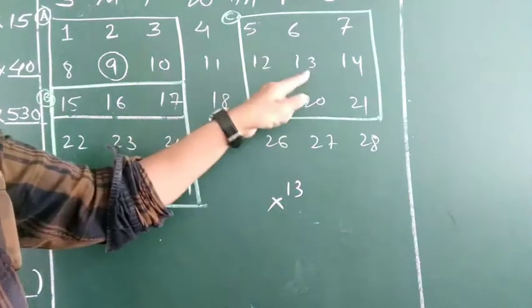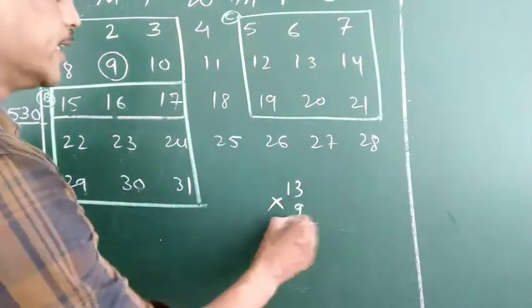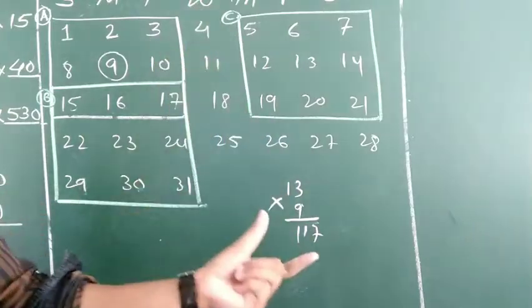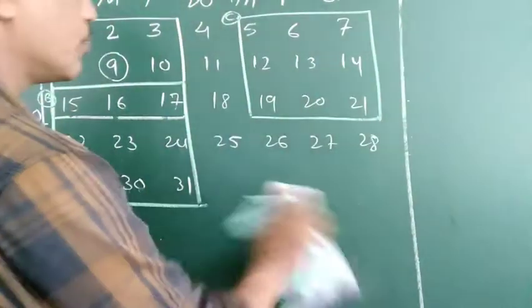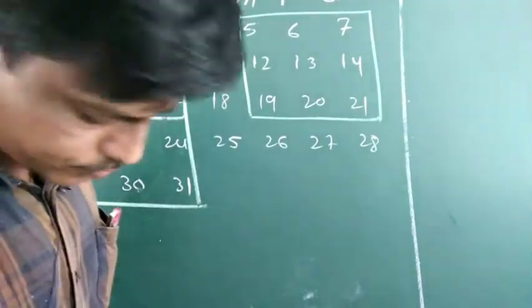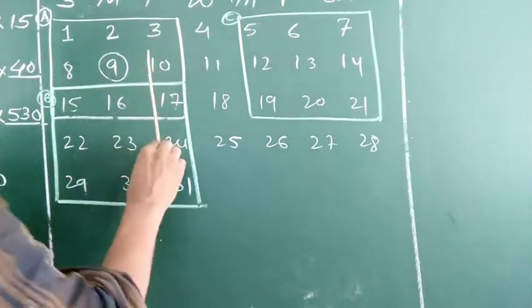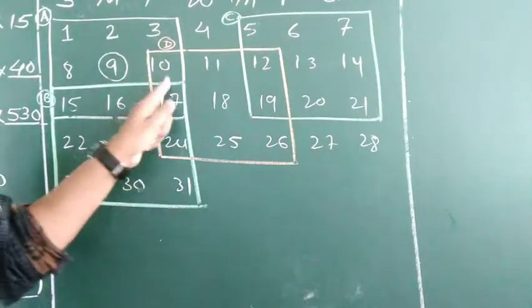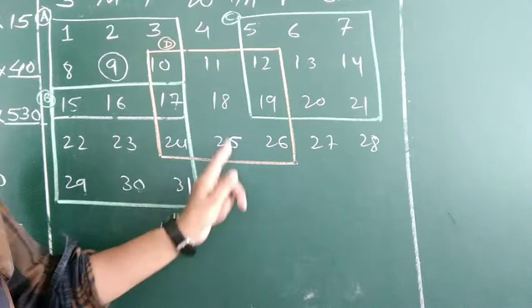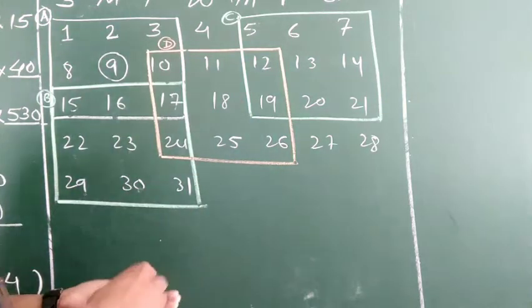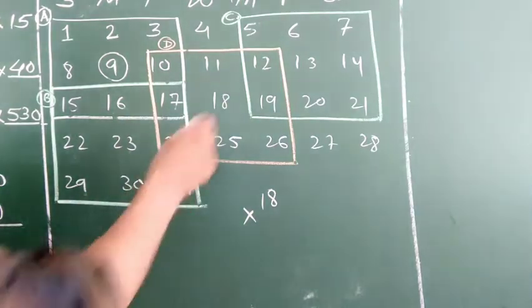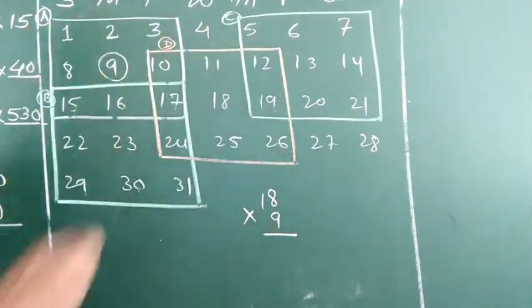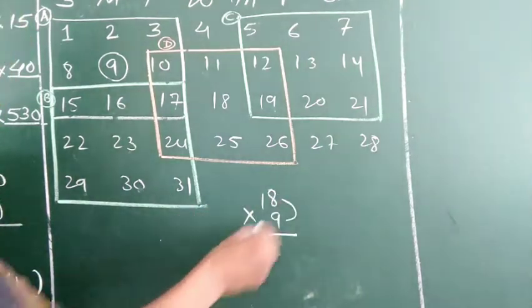Now I will make square C. In square C the numbers are: 10, 11, 12, 17, 18, 19, 24, 25, 26. The middle number is 18. How many numbers are there? 9. And 18 into 9: the total 9 numbers, so 18 times 9 equals — the sum of all numbers in square C will be 162. Wait, actually for square C the middle number is 30, so 30 into 9 equals 117.